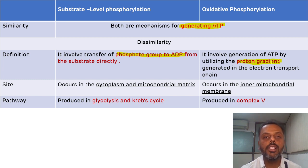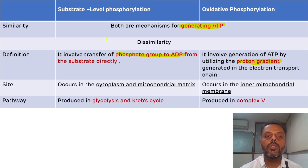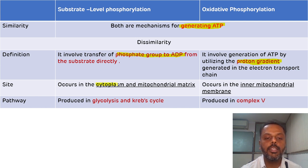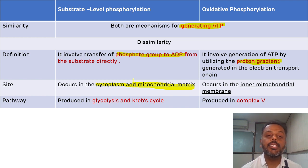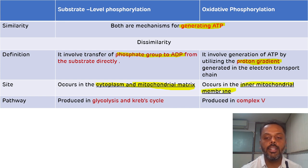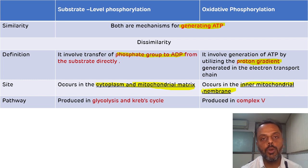The second difference is related to the site. Substrate level phosphorylation can occur in the mitochondrial matrix as well as in the cytoplasm. While oxidative phosphorylation occurs in the inner mitochondrial membrane, because that is the location of the electron transport chain.